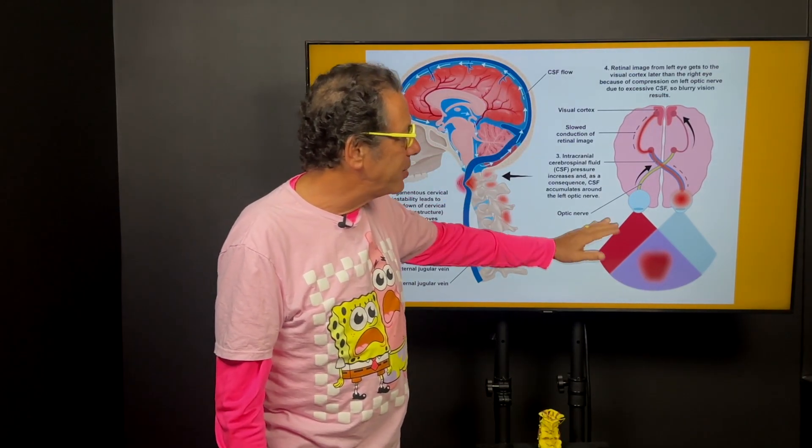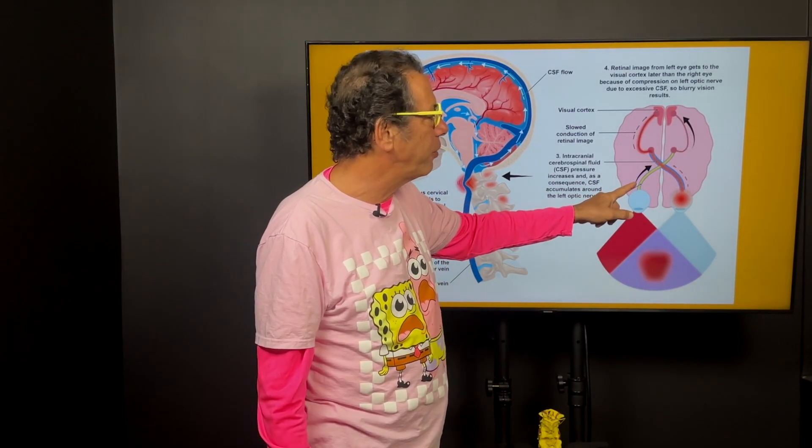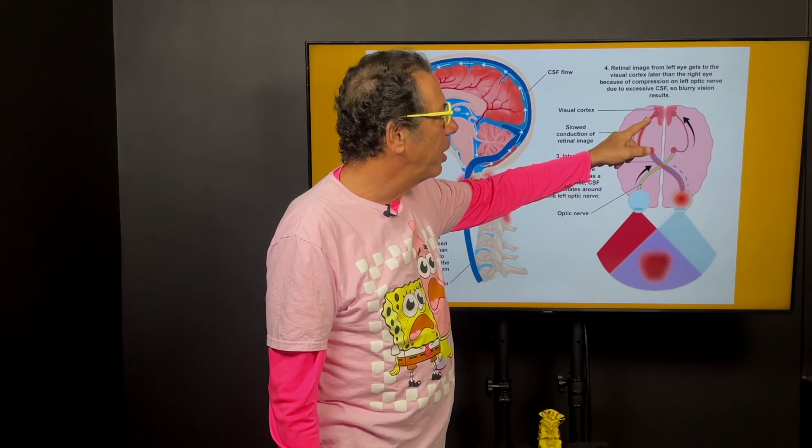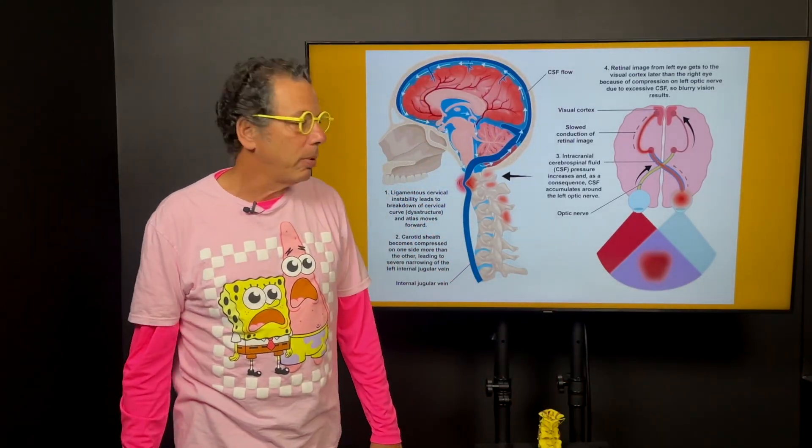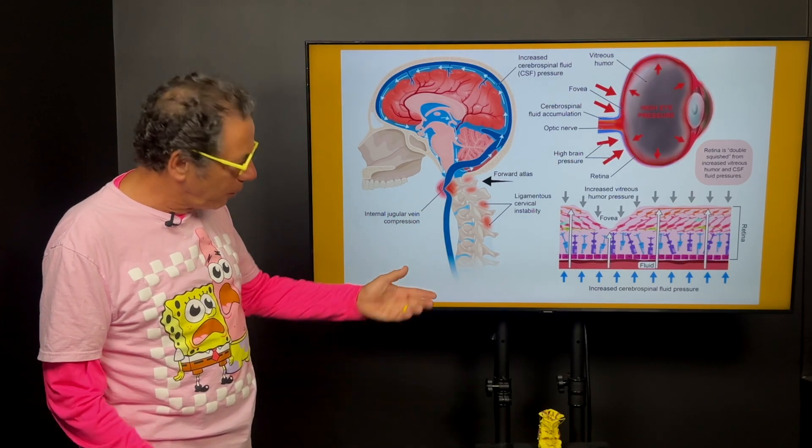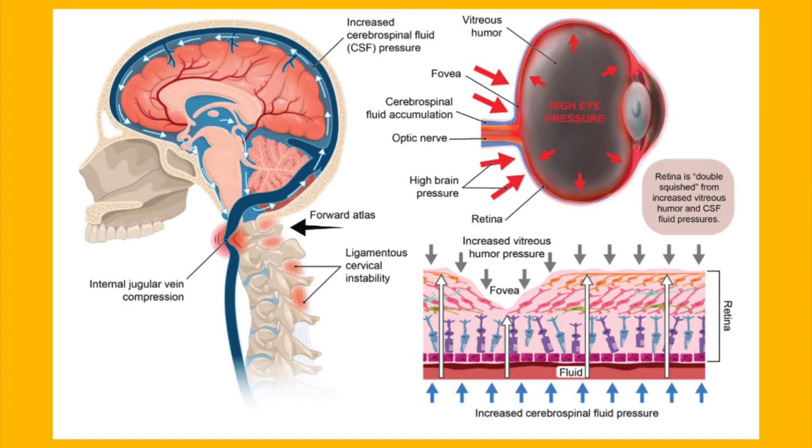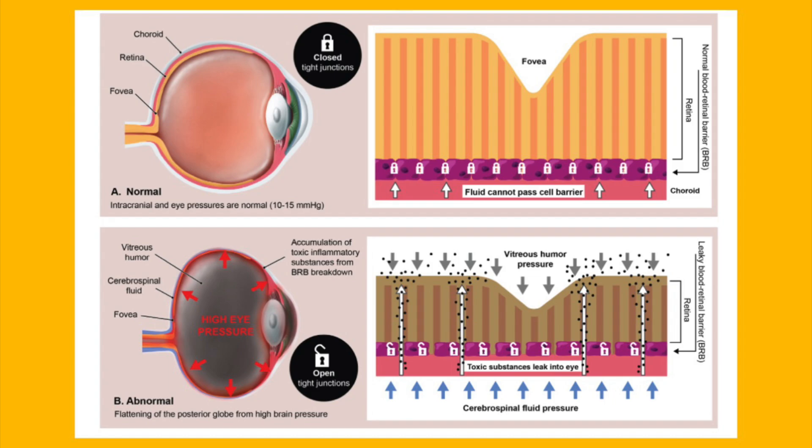Block jugular vein and basically when there's excessive fluid around let's say one optic nerve versus another, the image here gets to the brain slower than on this side so then of course you get a blurry image. So if you have blurry vision I would definitely tell you to come here and get an evaluation because it's a progressive disorder. But basically because of the forward head the jugular vein gets blocked and all kinds of things happen including excessive pressure on the retina so you can get all kinds of retinal diseases. You can get floaters. You start seeing lights.